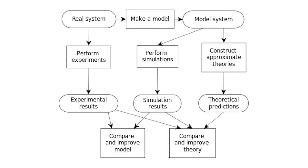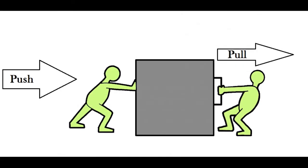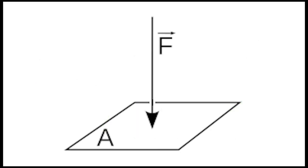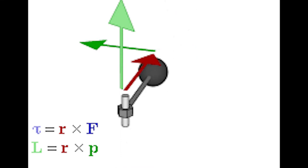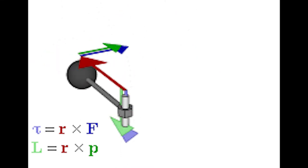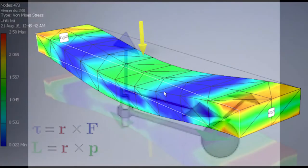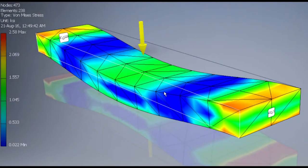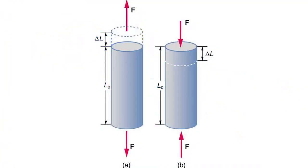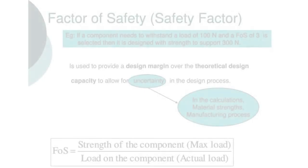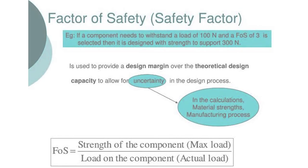First, let us talk about force. Force is basically the push or pull on any object. Pressure is simply force applied over an area. Torque is essentially the amount of twisting force on an object at a point. Stress can be thought of as the internal reaction to forces on an object. Strain is the measure of the deformation of a material.